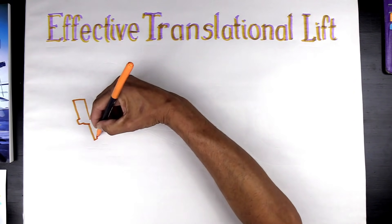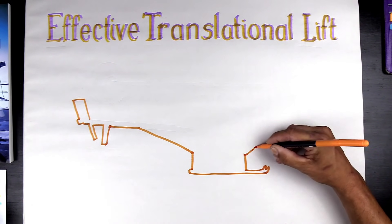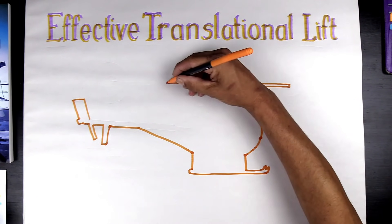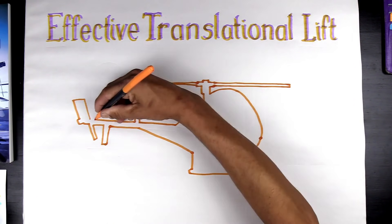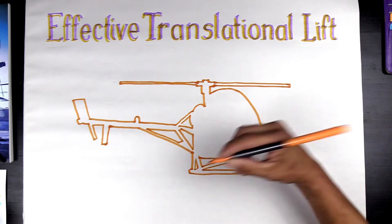Now we're going to do a video on a helicopter going from stable hover flight all the way through ETL and what happens aerodynamically and what happens to the ship. For these scenarios we're going to pretend there's no wind, so dead calm, and we're going to start off in a hover.